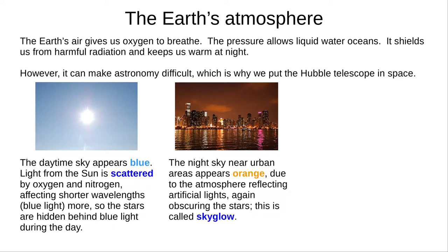Near cities and towns, the sky takes on an orange colour at night, as dust in the atmosphere reflects artificial light. This is called sky glow, and makes the sky too bright to see dim stars.